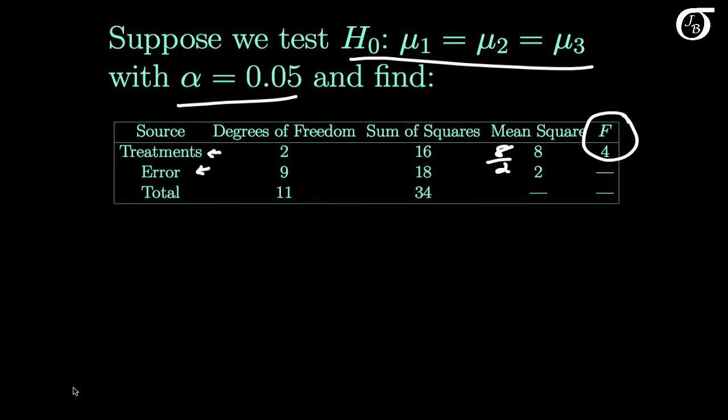If the null hypothesis is true, the F statistic has an F distribution. We need the appropriate degrees of freedom. Now since our mean square treatment was in the numerator, then 2 is going to be our numerator degrees of freedom, and mean square error was in the denominator, so 9 is going to be our denominator degrees of freedom.